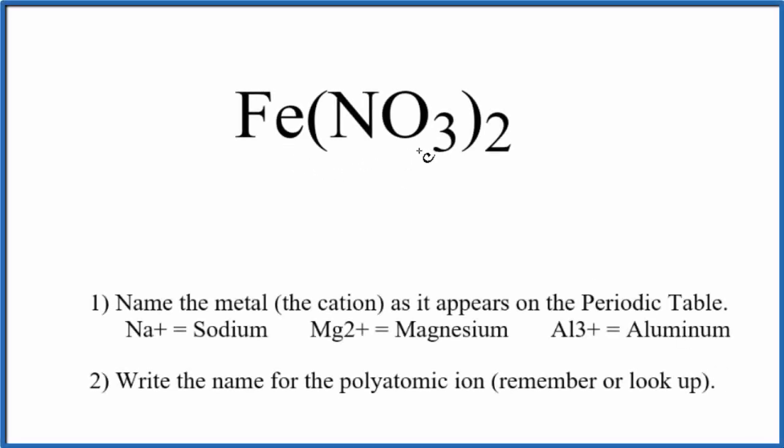To write the name for Fe(NO3)2, the first thing you need to realize is that you have this polyatomic ion here. It's called the nitrate ion. We actually have two of them.